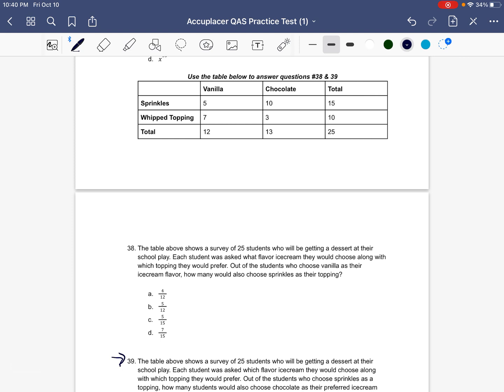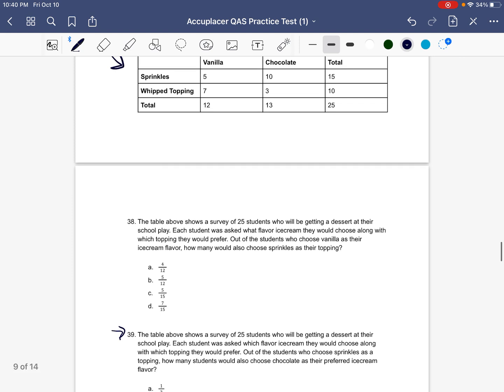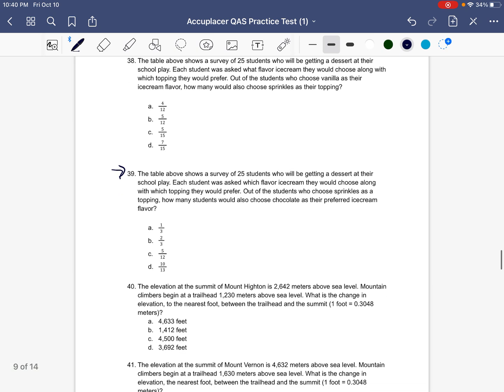It's telling us to use the table below to answer questions number 38 and 39. So we're going to be using this table here. Question 39 says the table above shows a survey of 25 students who will be getting dessert at their school play. Each student was asked which flavor ice cream they would choose along with which topping they would prefer. Out of the students who chose sprinkles as a topping, how many students would also choose chocolate as their preferred ice cream flavor?